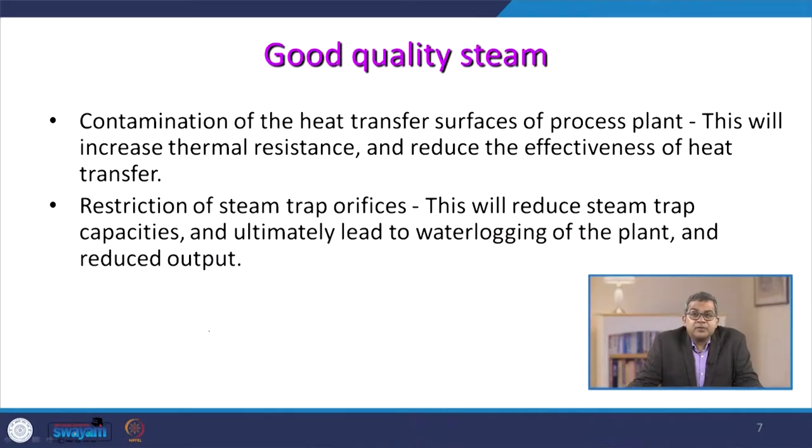Contamination of the heat transfer surface of the process plant will increase thermal resistance and reduce the effectiveness of heat transfer, which is essential for maximizing efficiency. Sometimes contaminants may restrict the steam trap orifice. If the steam trap is not working properly, it cannot distinguish between steam and water, which is extremely dangerous for boiler operation. A restriction in the steam trap orifice will reduce steam trap capacity and ultimately lead to water logging of the plant and reduce output.